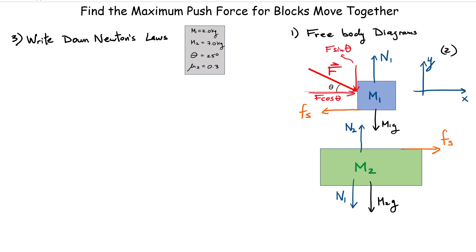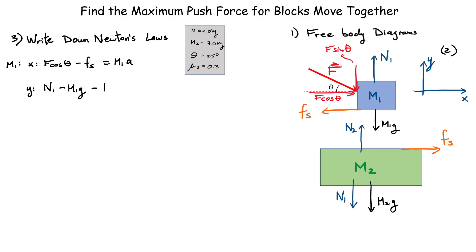Now we're in a position to write down Newton's laws. For block M1, we consider the x and y directions. In the x direction, we have two forces: F cosine θ and the force of static friction, so: F cosine θ minus the force of static friction equals M1 times A. In the vertical direction, there are three forces: the normal force N1 acting up, and two forces acting down — the weight M1g and the vertical component of the applied force F sine θ. There is no acceleration in the vertical direction.